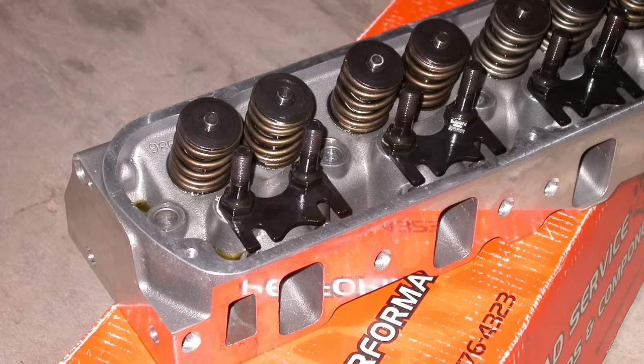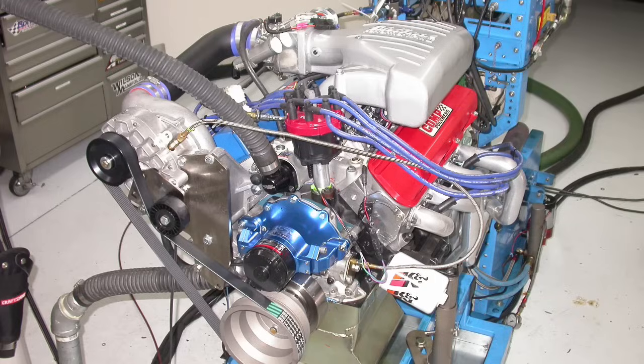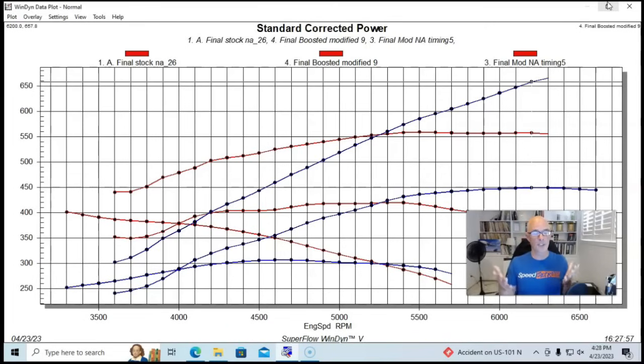Rev it up, put a centrifugal blower on it, and all of a sudden this Vortech 347 is making some pretty serious power. But this begs the question: the 347 is doing well, but what about the little 302?